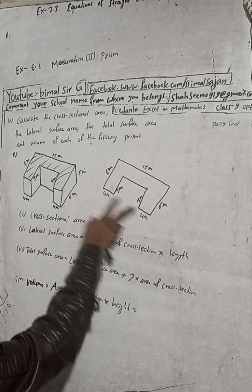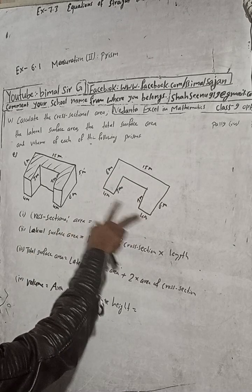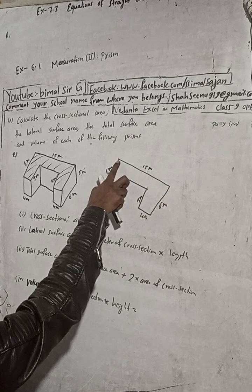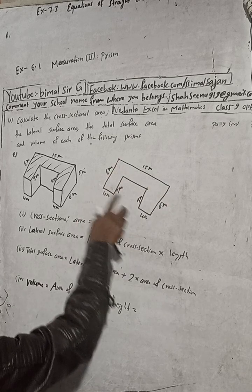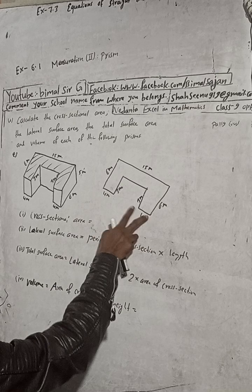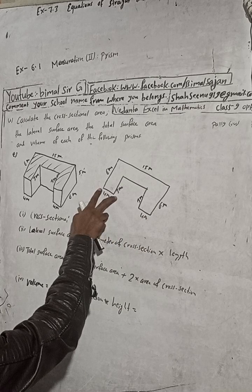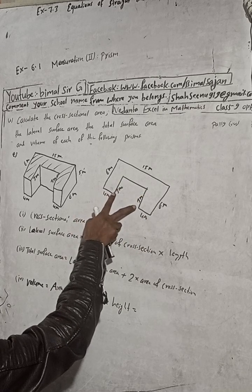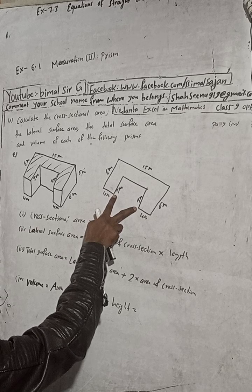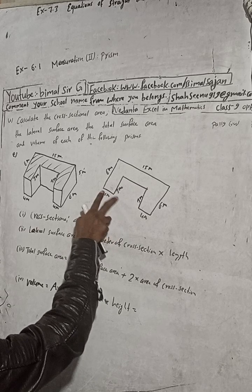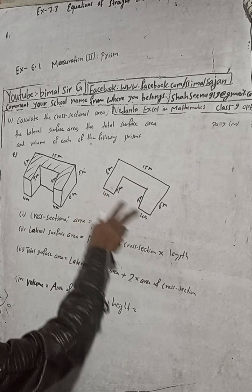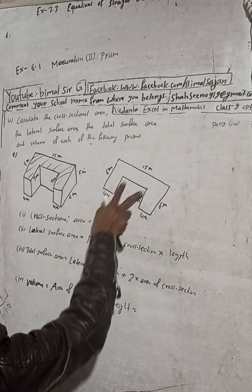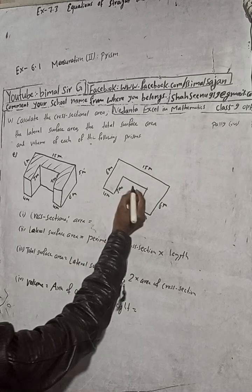We can see this is 4 and this is 4, so 4 plus 4 equals 8. The total is 15, so 15 minus 8 equals 7. This must be 7 meters. So 7 plus 4 is 11, plus 4 is 15 — correct. So this dimension is 7 meters.